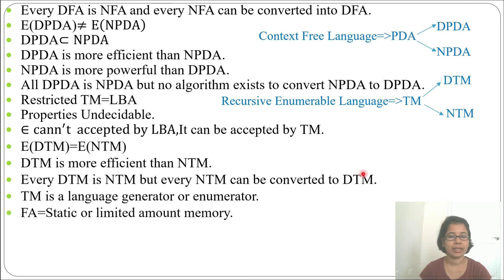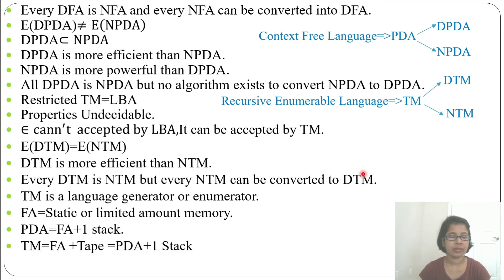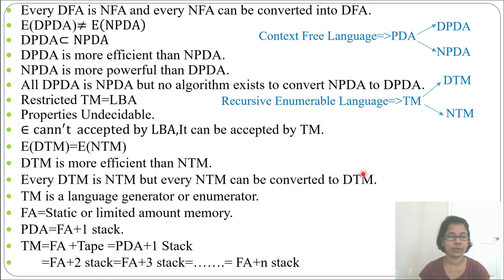Comparing memory: FA has no memory or only a static, limited amount of memory. PDA equals FA plus one stack — it uses the stack data structure, allowing comparison of two strings. Turing machine equals FA plus a tape, or equivalently PDA plus one additional stack. FA plus two or more stacks equals FA plus one tape. So FA plus any number of stacks greater than two equals one Turing machine tape — that is the memory equivalence of a Turing machine.